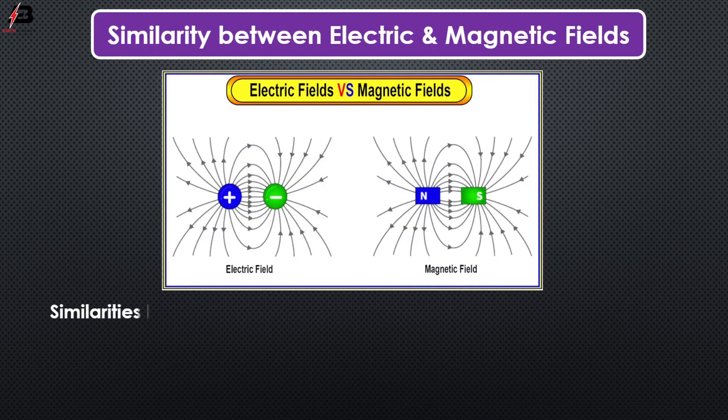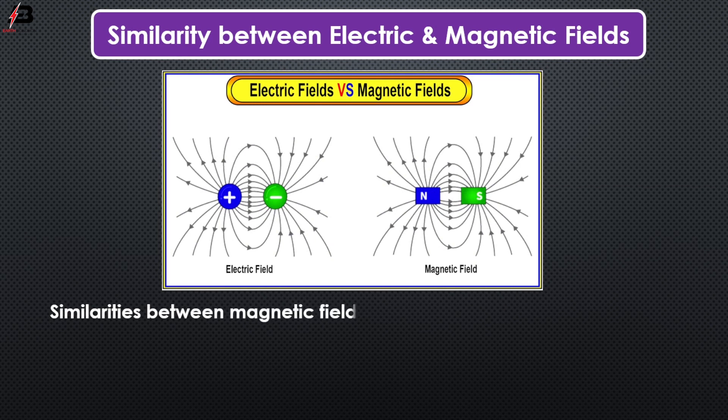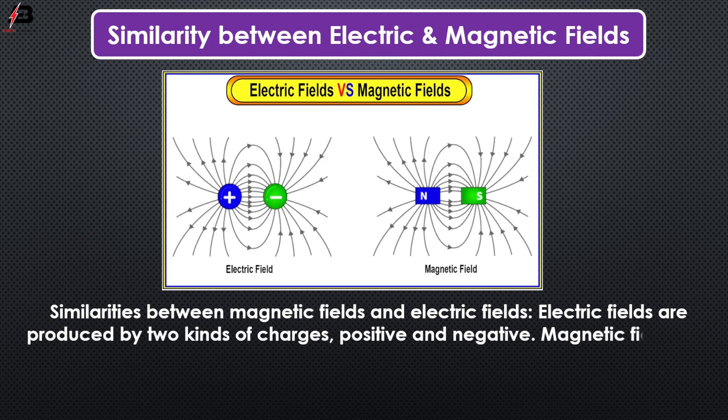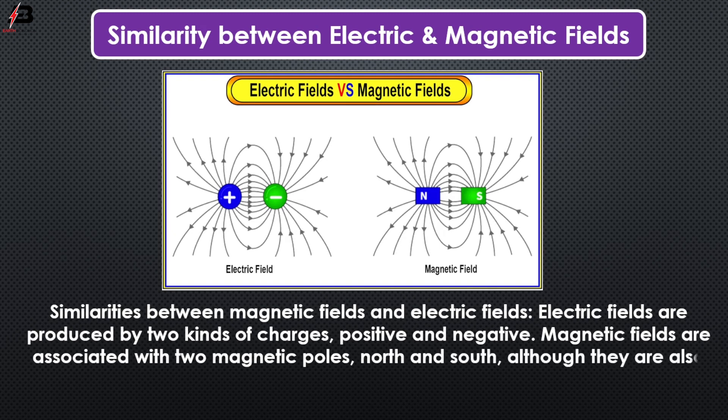Similarity between electric and magnetic field. Electric fields are produced by two kinds of charges, positive and negative. Magnetic fields are associated with two magnetic poles, north and south, although they are also produced by charges, but moving charges.